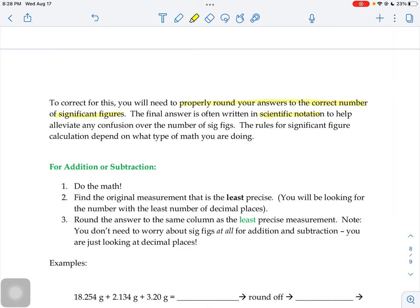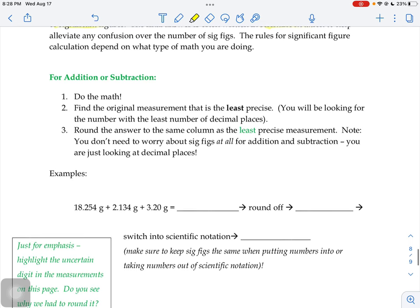Here are the rules for addition and subtraction. You're going to do the math. Find the original measurement that is the least precise. You're looking for the measurement with the least number of decimal places. Then you're going to round the answer to the same column as that least precise measurement. Note, you don't have to worry about sig figs at all for addition and subtraction, you're just looking at decimal places.